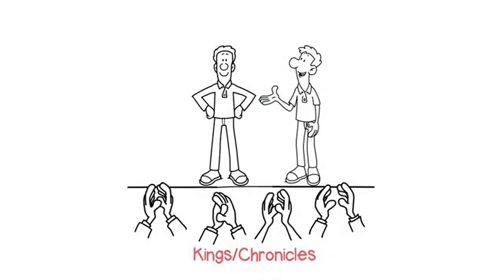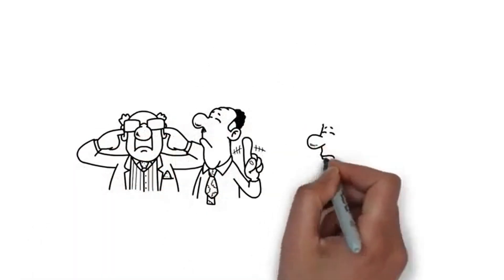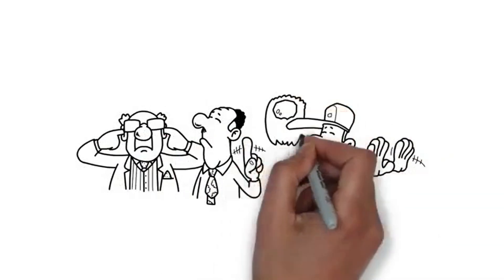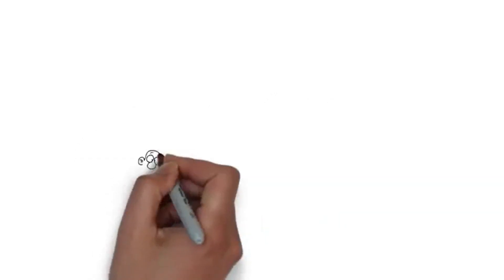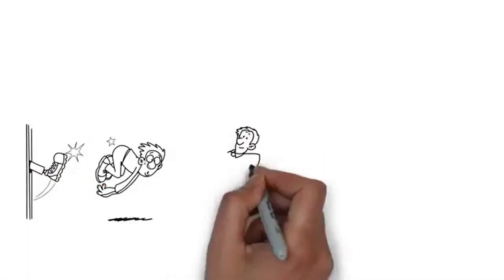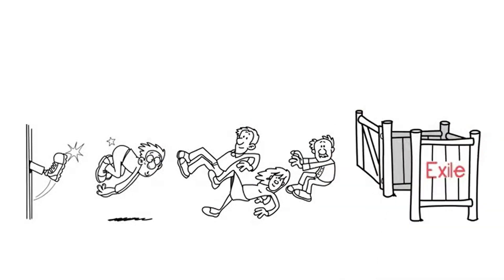The wealth and surrounding idolatry made them unfaithful to Yah and led the northern ten tribes to reject his Torah light. He then divorced the adulterous ten tribes and sent them into exile, while Judah held on to his Torah.